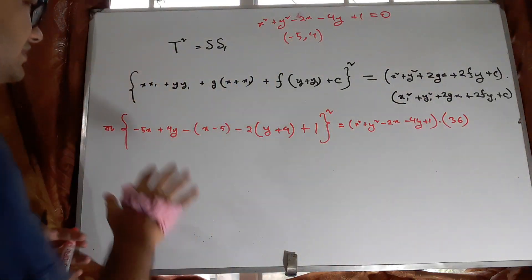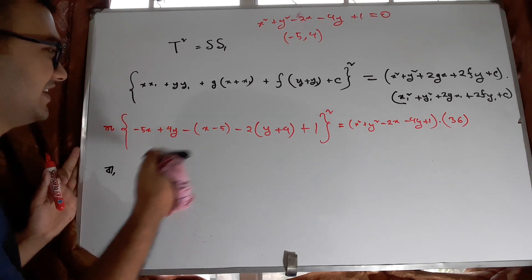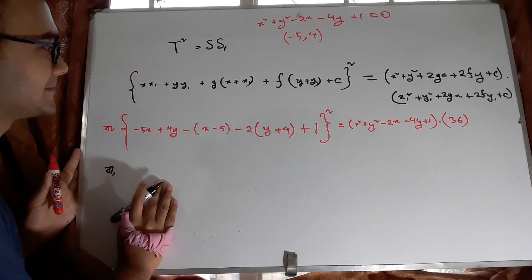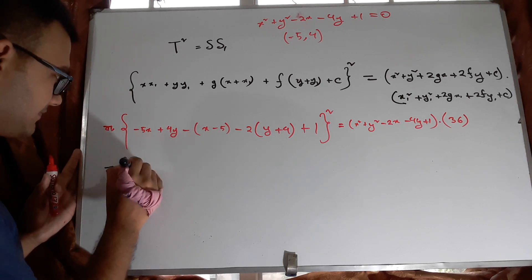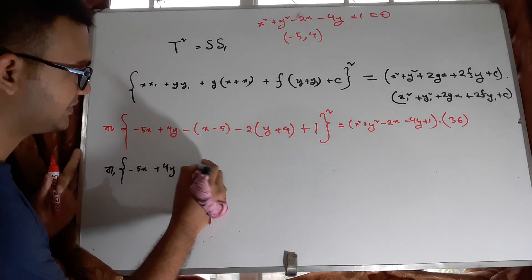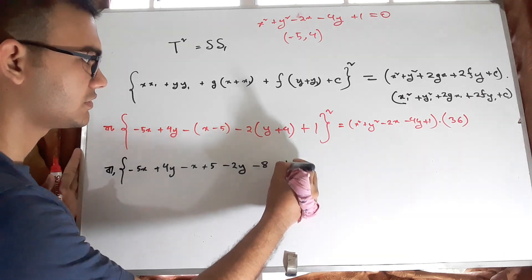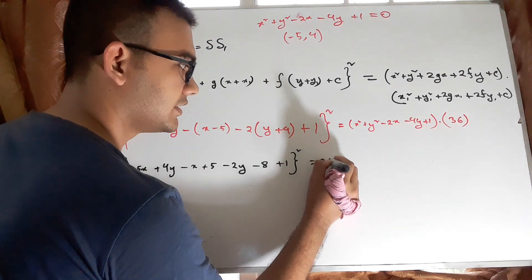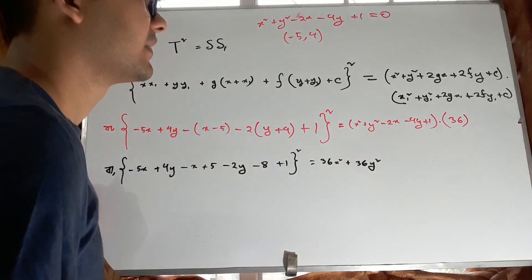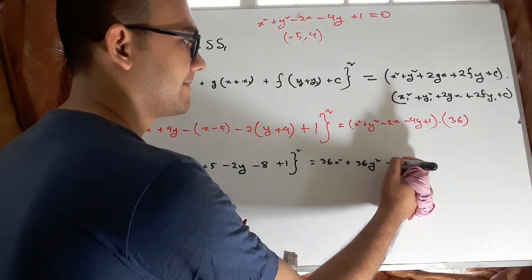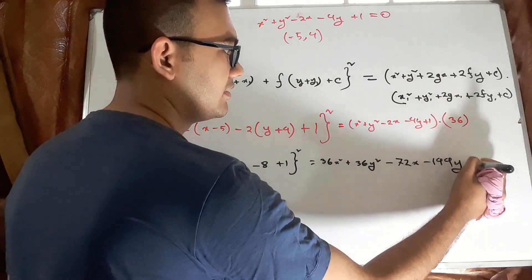For S₁, substituting (−5, 4) into x² + y² − 2x − 4y + 1: we get 25 plus 16 plus 10 minus 16 plus 1 equals 36. So S₁=36. Now expanding T² on the left side: (−6x + 2y − 2)² gives 36x² + 4y² − 24xy − 8y + 224 + 24x. On the right side, S times 36 gives 36x² + 36y² − 72x − 144y + 36.